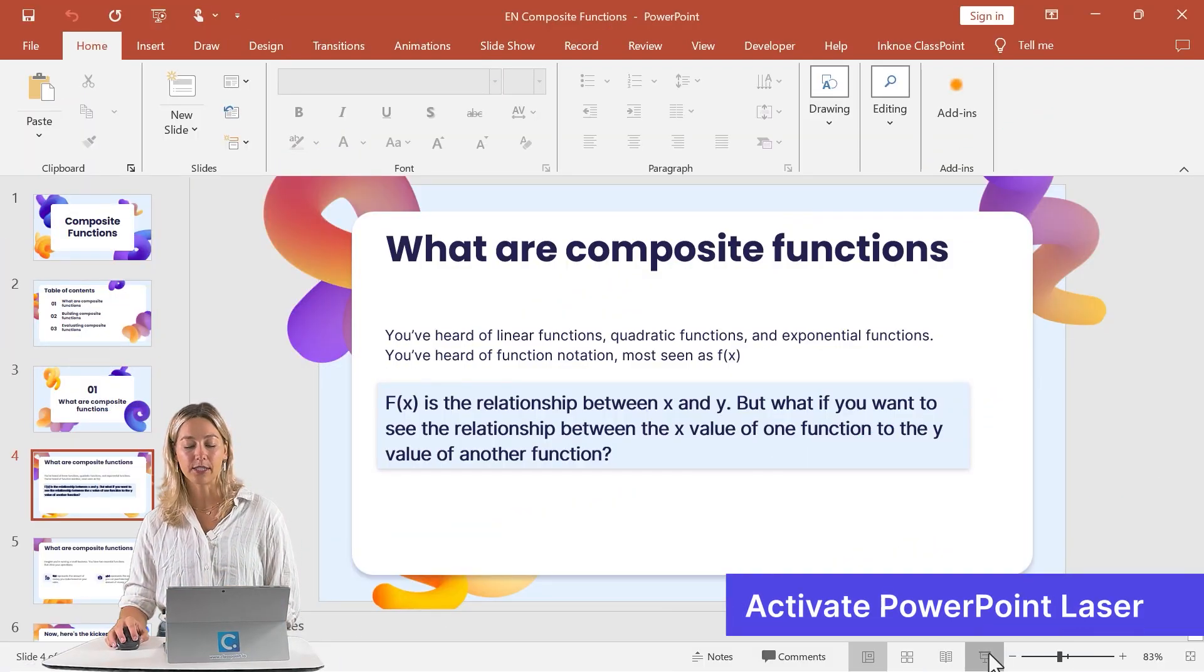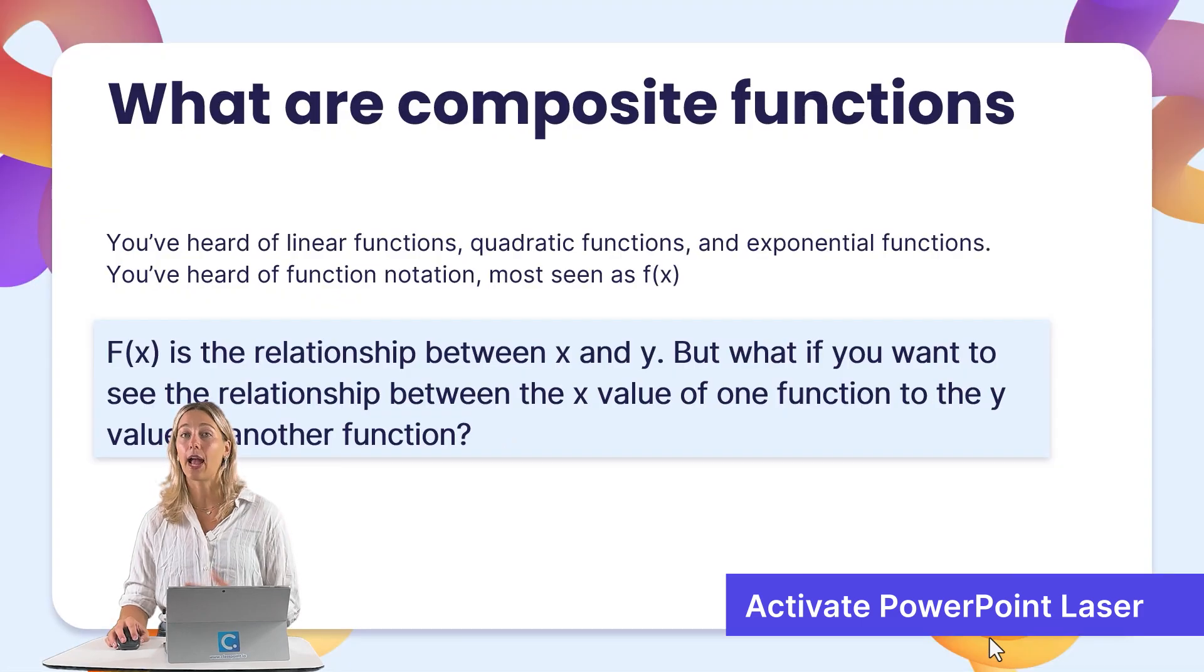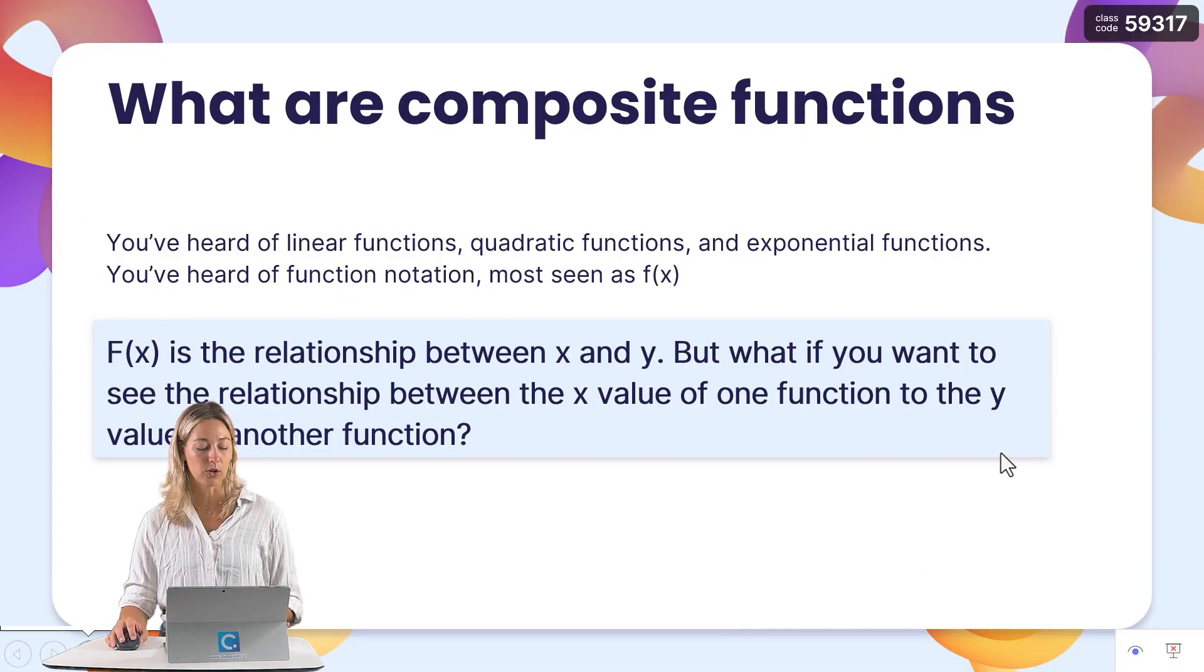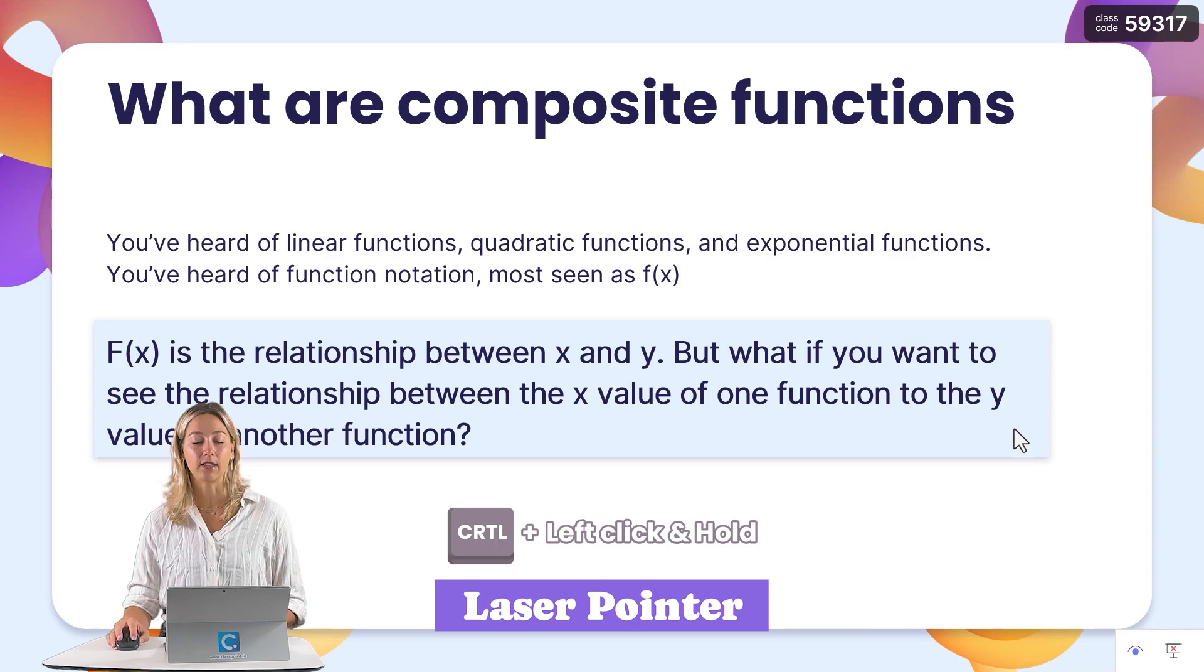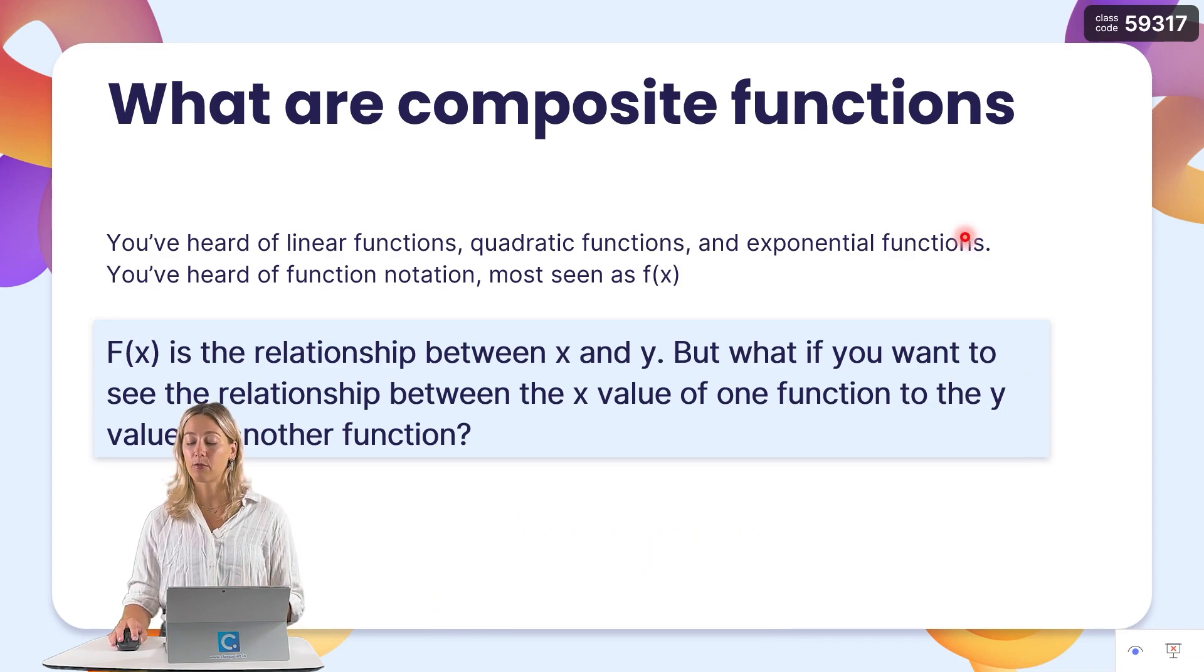So once you're in slideshow mode and your presentation has started, to activate that laser pointer hold down on the control key and then left click on your mouse. From there you still have to hold down on your mouse to keep this laser pointer active.